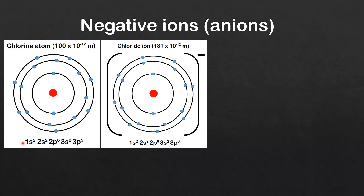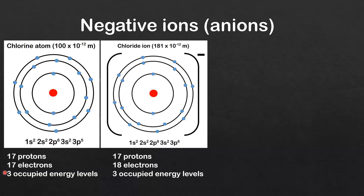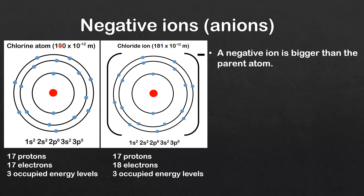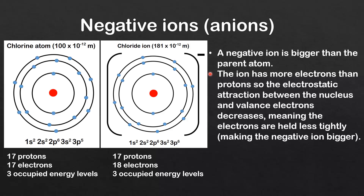Now looking at negative ions, using the chlorine atom as an example. The electronic configuration of chlorine is 1s², 2s², 2p⁶, 3s², 3p⁵ — 3 occupied energy levels with 7 valence electrons. The chlorine atom gains 1 electron to form the chloride ion with a 1− charge, giving the configuration 1s², 2s², 2p⁶, 3s², 3p⁶. Comparing: the atom has 17 protons, 17 electrons, and 3 occupied energy levels. The ion has more electrons than protons, so the electrostatic attraction between the nucleus and valence electrons decreases, meaning the electrons are held less tightly, making the negative ion bigger.